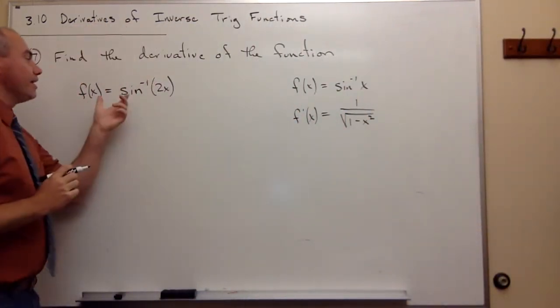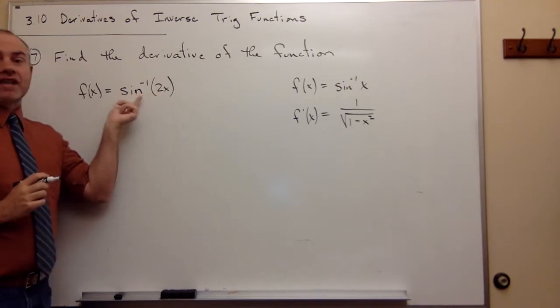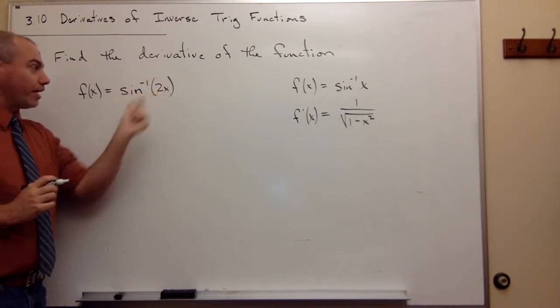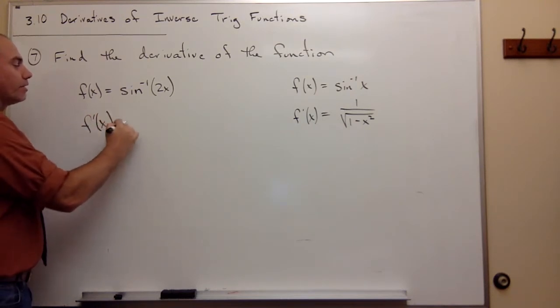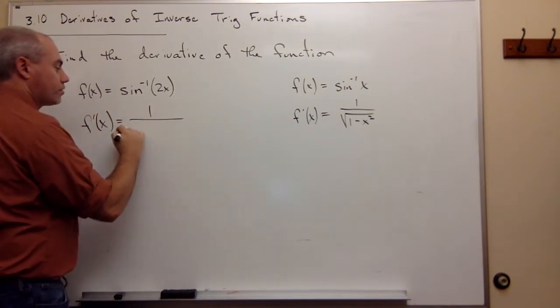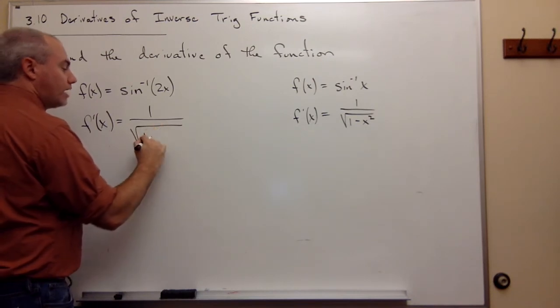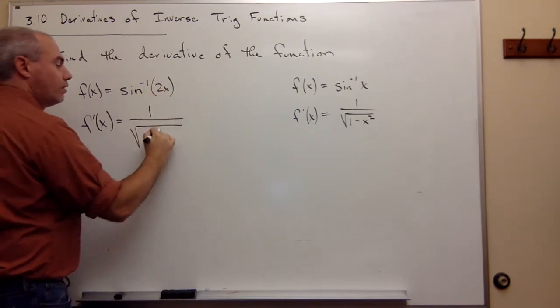If I want to take the derivative of sin⁻¹(something), then the derivative f'(x) is going to be 1/√(1-something²), which in this case is 1/√(1-(2x)²). But now, because we didn't just have an x here, we had a 2x...